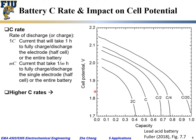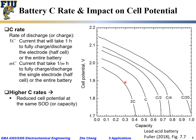Based on what we see from this plot, for the same capacity or state of discharge, the higher the C-rate — going from C/20 to 2C — the lower the cell potential. This makes sense because as you increase the current level and accelerate the discharge, both the ohmic drop, the overpotential associated with the electrode, and the concentration overpotential all increase, and this leads to decreased cell potential.